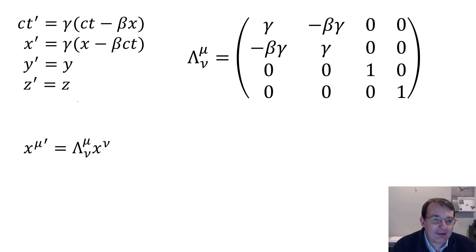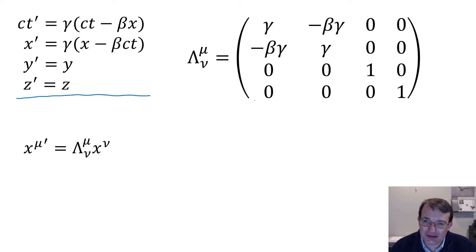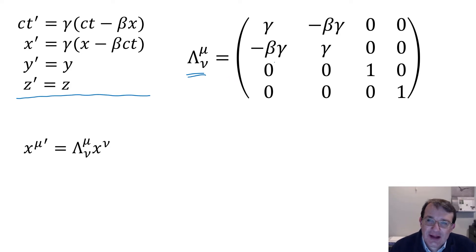Here we have the same Lorentz transforms as before, transforming the coordinates into frame S-prime from S. Here is a four by four matrix that's going to do the job for us. We write this as capital Lambda, and the two indices of the matrix are μ and ν — one at the top and one at the bottom — for reasons that will become clear shortly.